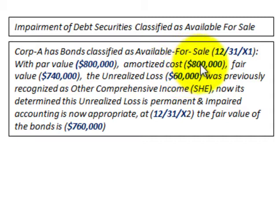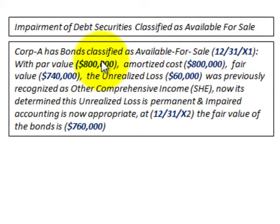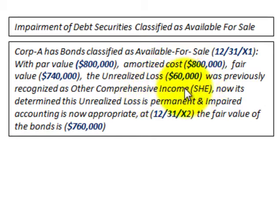The amortized cost is $800,000 and the fair value is $740,000, giving us the unrealized loss of $60,000. We're not dealing with any amortized discounts or premiums because par value equals our amortized cost. This $60,000 was previously recognized as other comprehensive income in shareholders' equity.